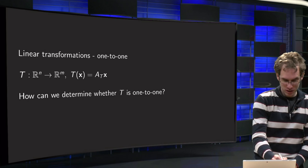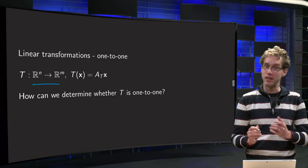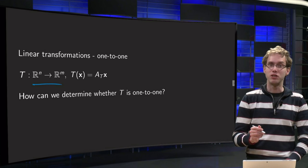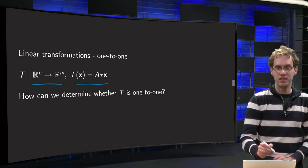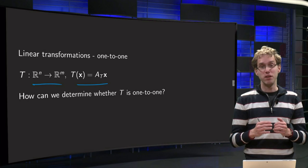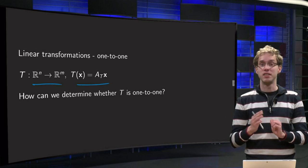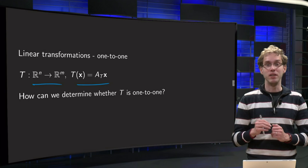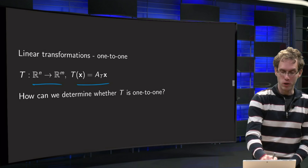So we will take our transformation T from Rn to Rm, it is a linear transformation, so it is given in terms of a standard matrix A, so we know T of x equals A times x. How can we determine whether T is 1 to 1?